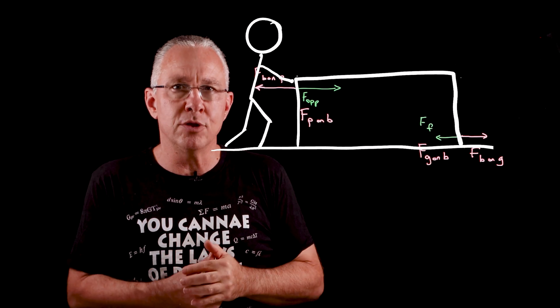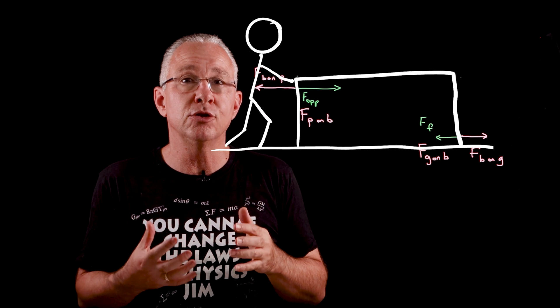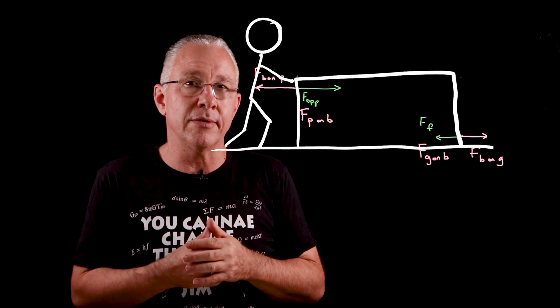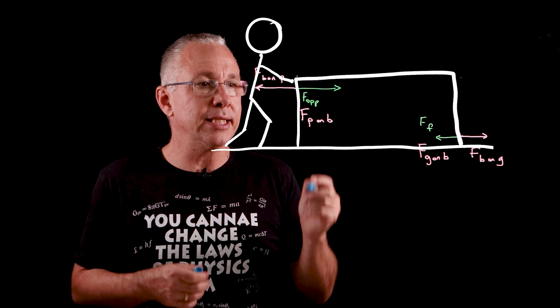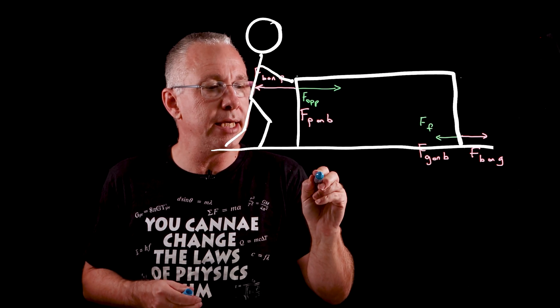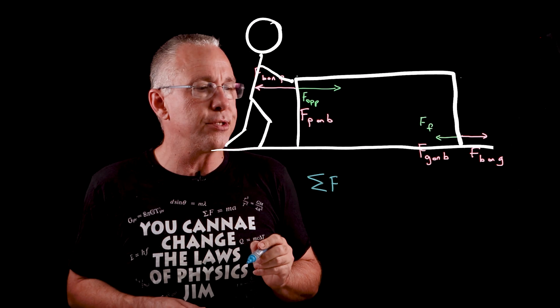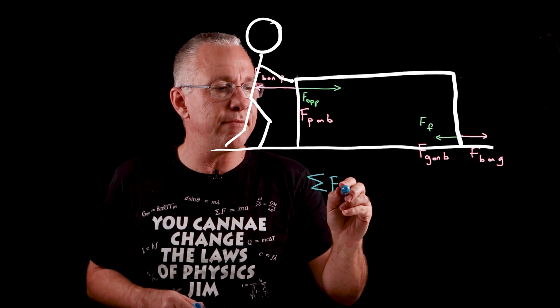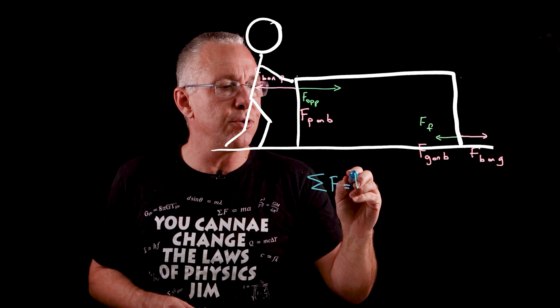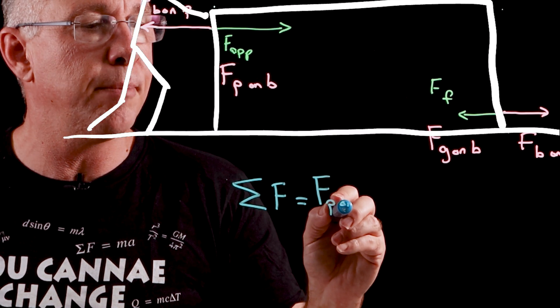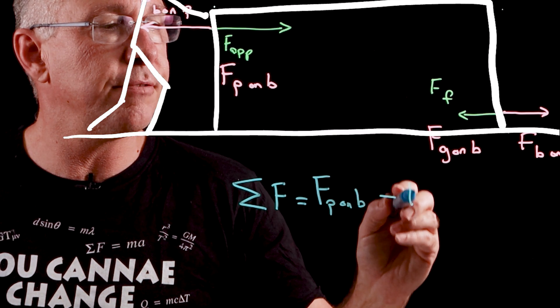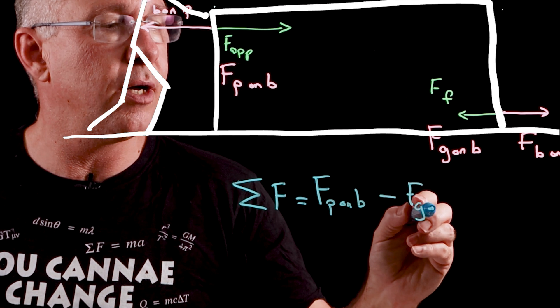And so what will happen to the box? Well the box is going to accelerate. And what is that acceleration dependent on? Well the first thing that it's dependent on is what we say is the net force, the sum of the forces. And in this case what we have is it's equal to this force here, the force of the person on the box minus the force of the ground on the box.